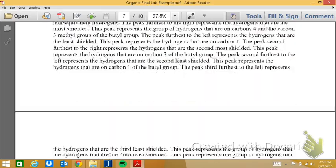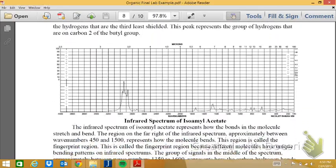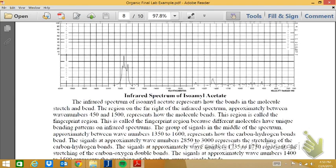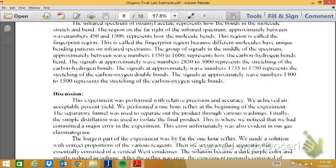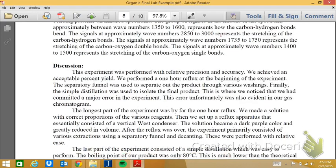Likewise, this student also included the IR, and again, he or she has explained what the IR means. For example, they've indicated here the fact that the wave numbers at 2850 to 3000 indicates the stretching of the carbon-hydrogen bonds. You would just, which may not make sense to you now, but it will later on in the semester. Finally, you've got the discussion section.